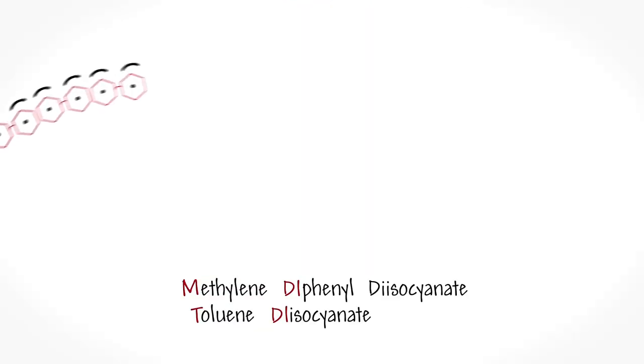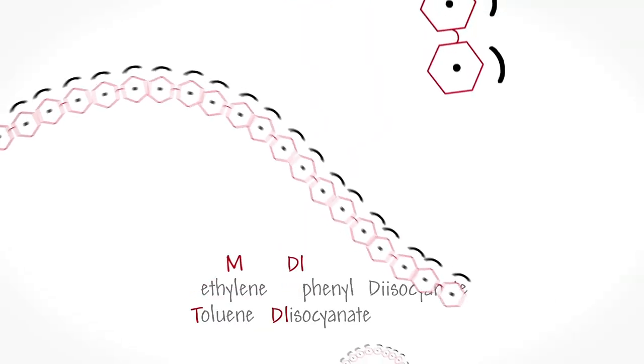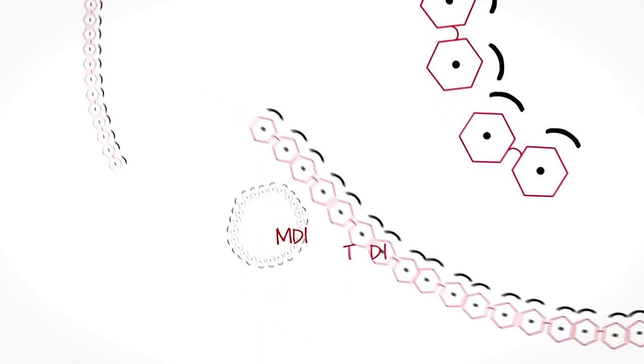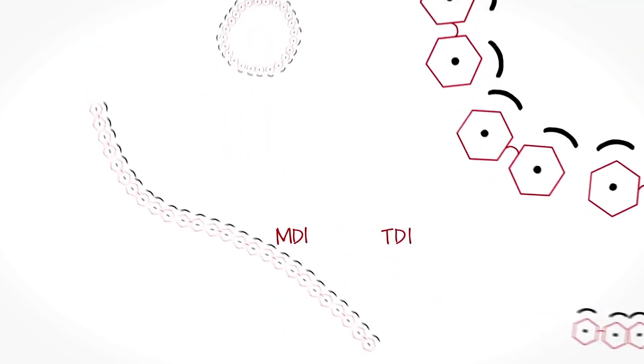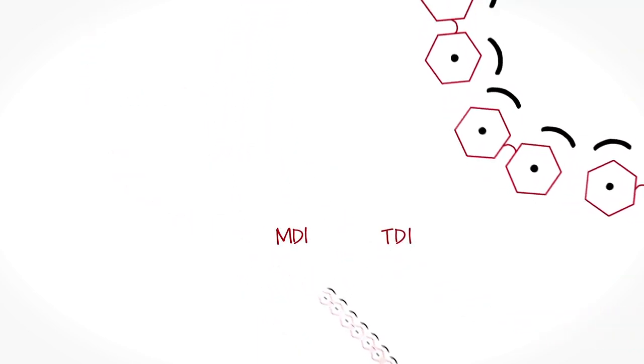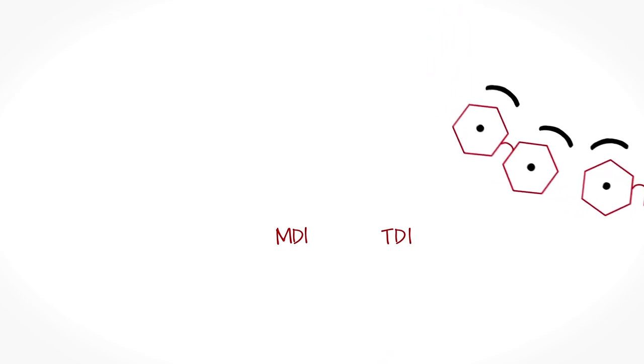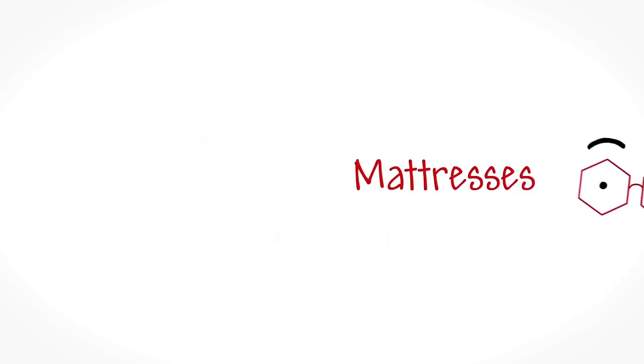Pure MDIs and TDIs, that's their nicknames, form long and squiggly chemical structures. That's because they have fewer places to connect to. They are generally used to make flexible products like seat cushions, mattresses and sealants.